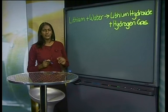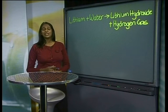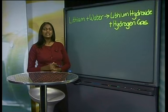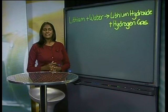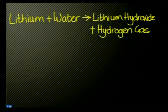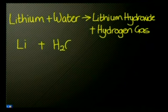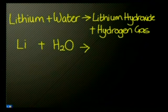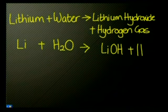This word equation is correct but does not accurately represent the changes taking place. We still need to translate to chemistry by writing down the formulae of the substances that are reacting. Lithium has the symbol Li. Water has the formula H₂O. Lithium hydroxide is LiOH. And hydrogen is a diatomic molecule with a formula of H₂.